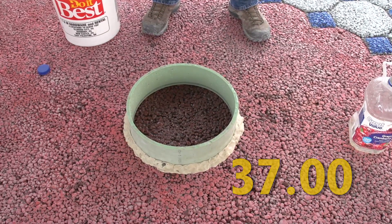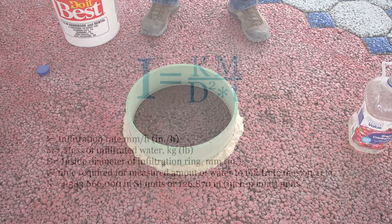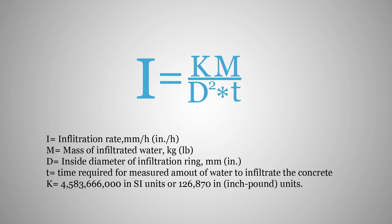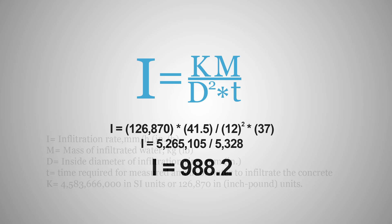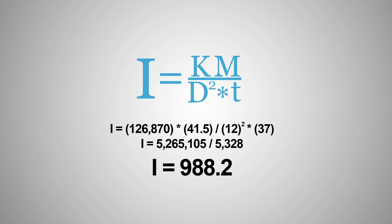The final step involves calculating the drainage rate of the pavement. Here is the equation used for this calculation. Based on this equation, we can calculate that our test pad drains at a rate of approximately 988 inches per hour.